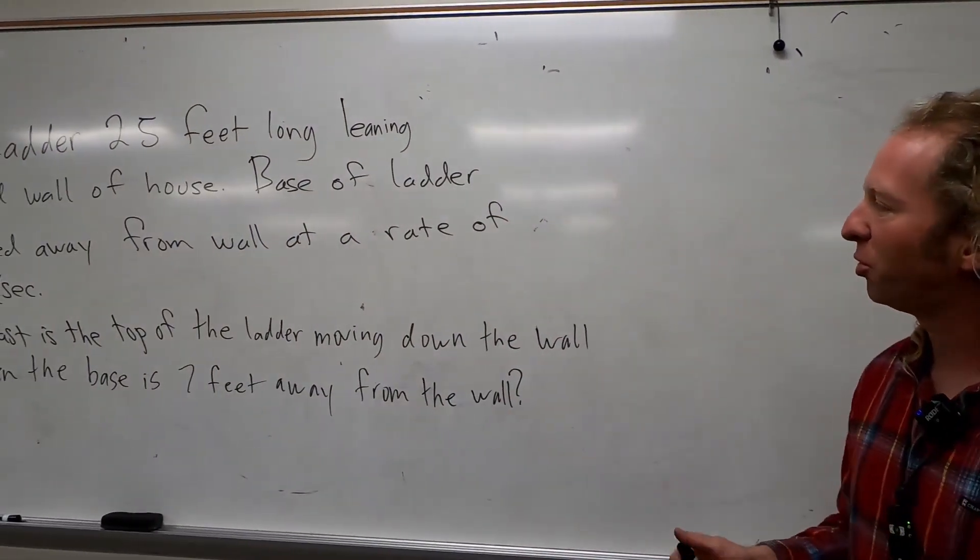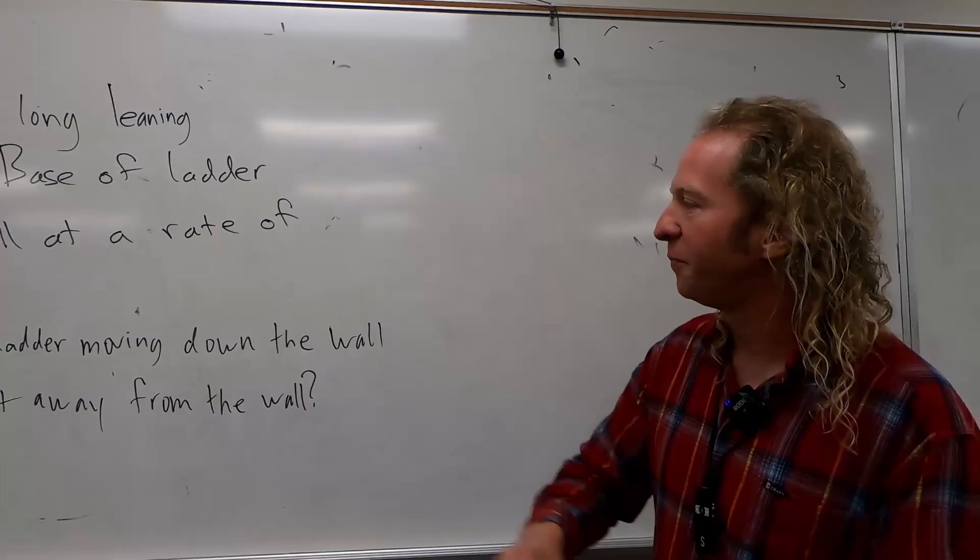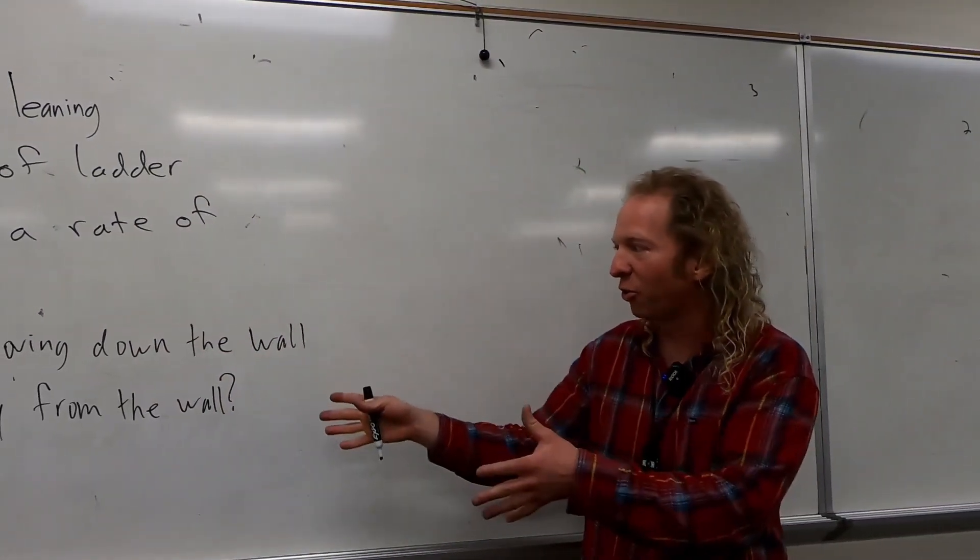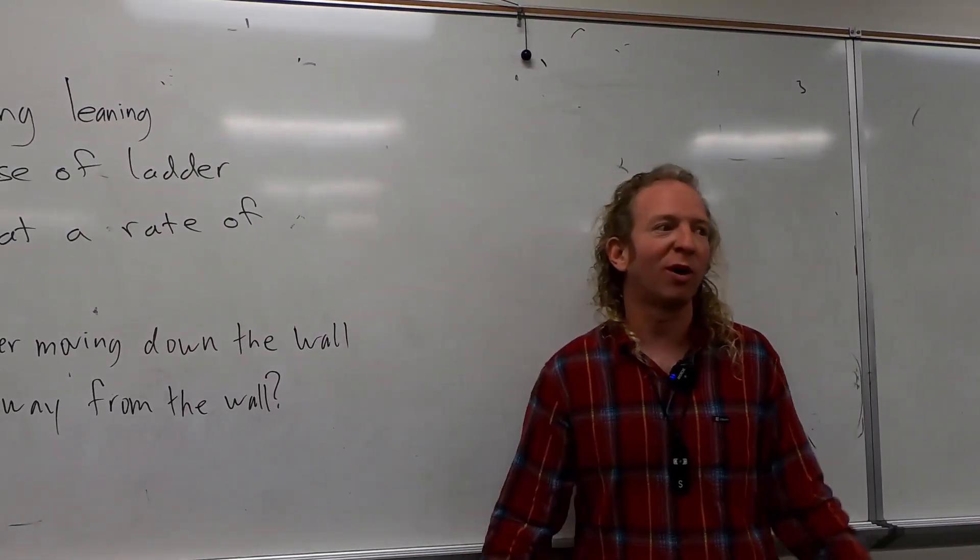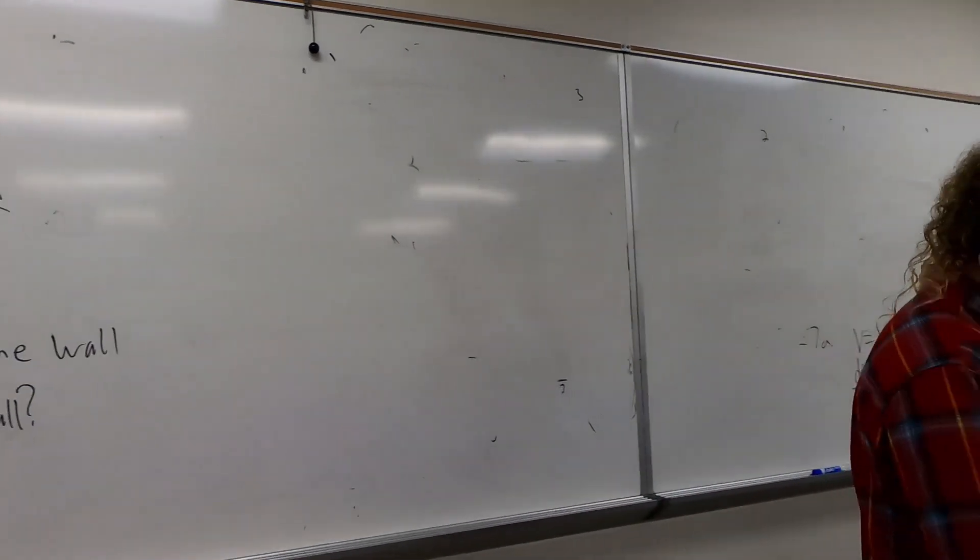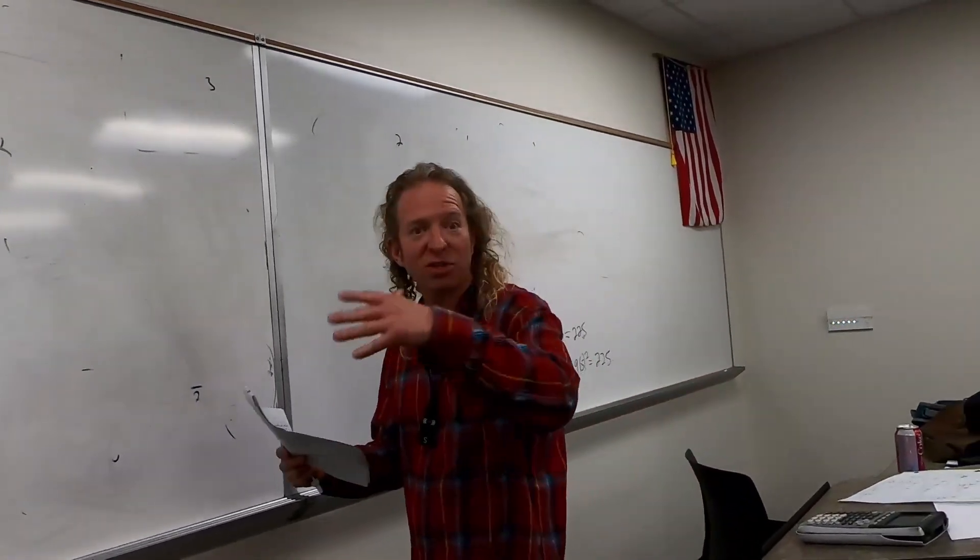The base of the ladder is pulled away from the wall at a rate of 2 feet per second. How fast is the top of the ladder moving down the wall when the base is 7 feet away from the wall? Yikes! So there's a lot of information. So let me give you the pictures.